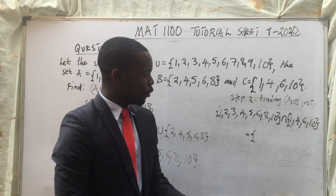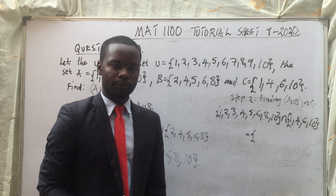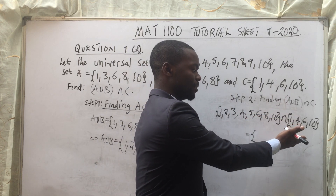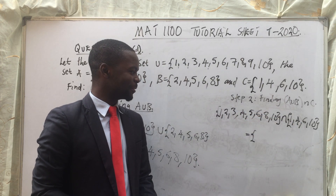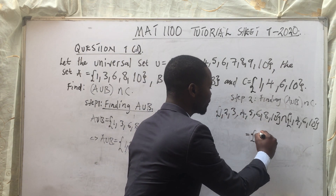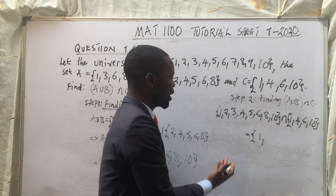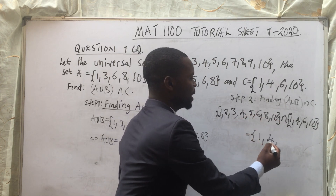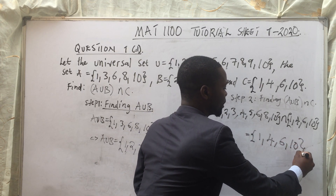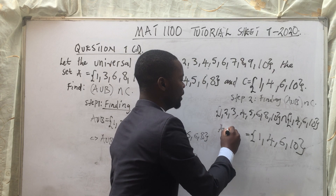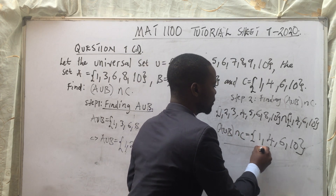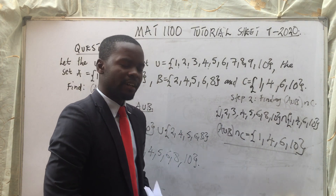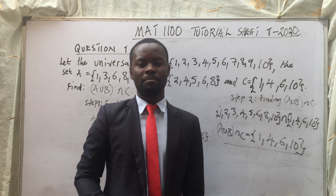Now, this symbol simply means intersecting, meaning that we are looking for the elements which are in this set as well as this set — the common elements in short. So we have got: 1 is common, 2 is not common, 3 is not common, 4 is common, 5 is not common, 6 is common, and 10 is common. So this is our A union B intersection C: {1, 4, 6, 10}. Very simple calculation. Very simple subject — Mathematics.